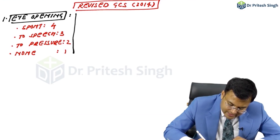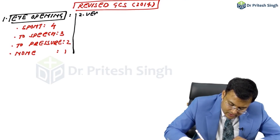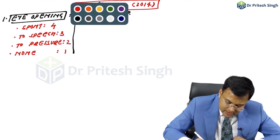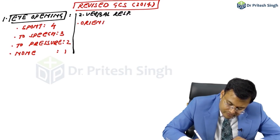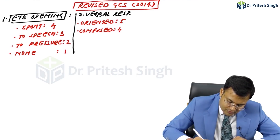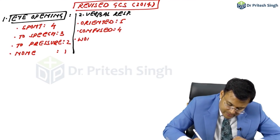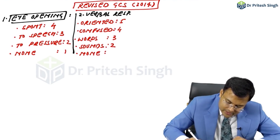The second component is Verbal Response. If the patient appears Oriented, the score is 5. If the patient is Confused, it is 4. If the patient is Speaking Some Words, it is 3. If the patient is Producing Some Incomprehensible Sounds, it is 2. And None is 1.